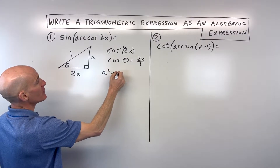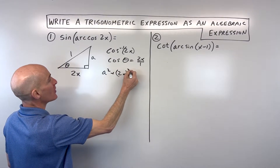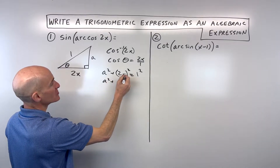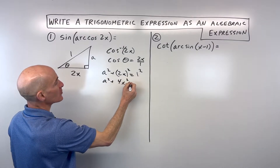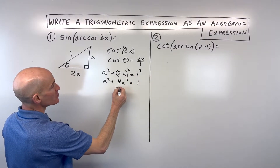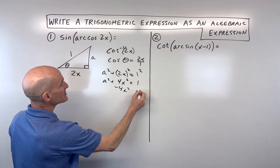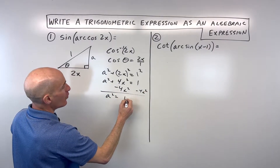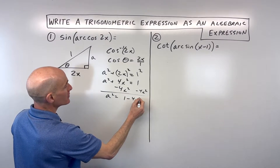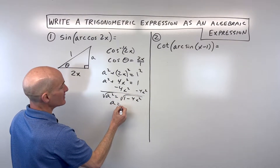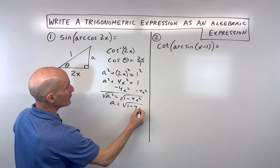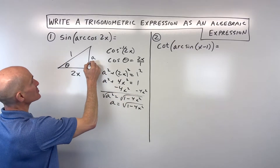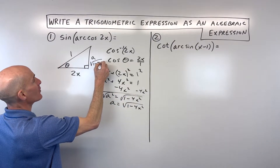We can say a squared plus the quantity 2x squared is equal to 1 squared. So a squared — 2x times 2x is 4x squared, 1 times 1 is 1. Let's subtract 4x squared from both sides. So we get a squared is equal to 1 minus 4x squared, and if we take the square root, we get a equals the square root of 1 minus 4x squared. So that's what this side is — let's write it below it: square root of 1 minus 4x squared.